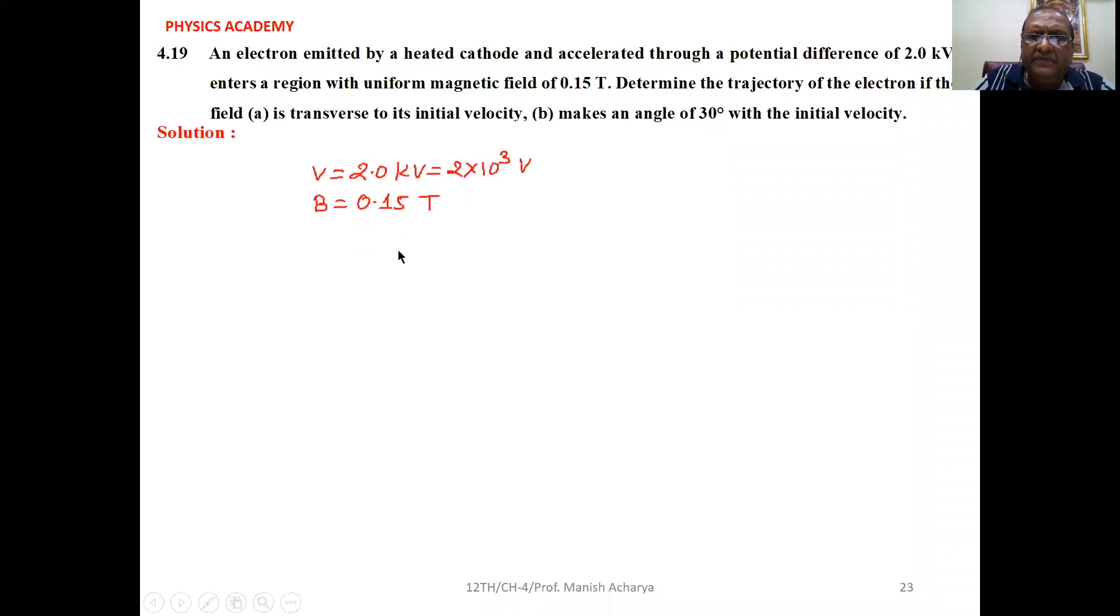The potential difference of 2 kV means 2 into 10 raised to 3 volts. Electrons emitted by the heated cathode are accelerated by this potential difference, and then enter the region with magnetic field B equal to 0.15 Tesla.